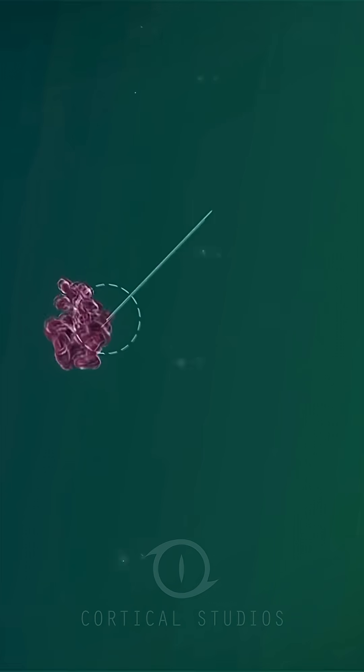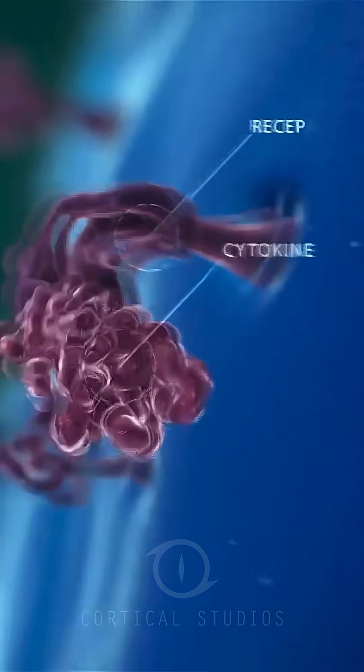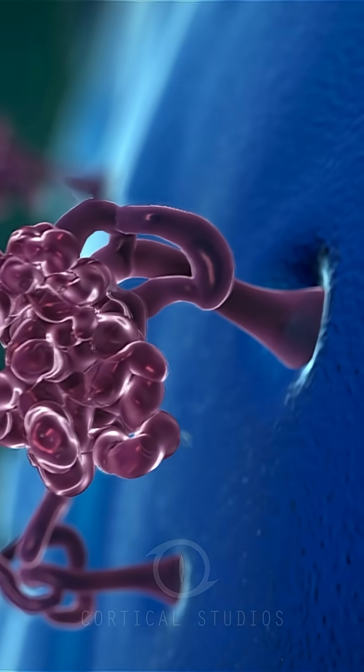Cytokines bind themselves to receptors on cells. Cytokines exactly fit the shape of such a receptor, like a key in a keyhole. In this manner, the cytokine communicates to another cell.